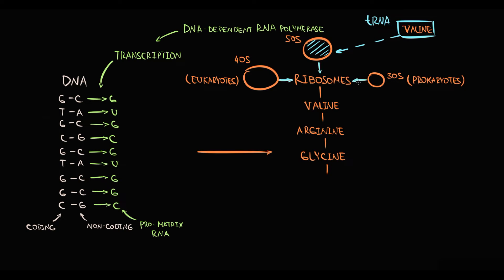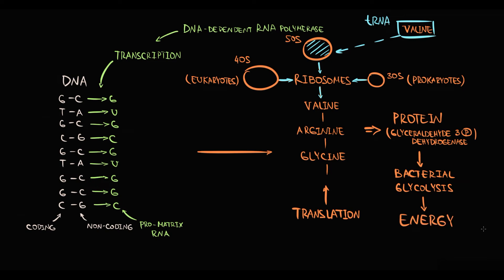Overall, this process is called translation, and a particular amount of amino acids form protein. And let's suppose that this protein is an enzyme glyceraldehyde 3-phosphate dehydrogenase, that participates in bacterial glycolysis. And glycolysis is the major source of energy for bacteria.